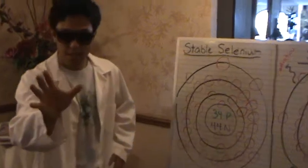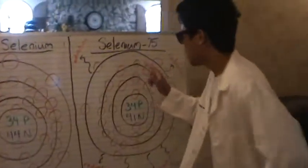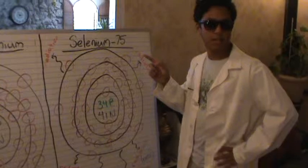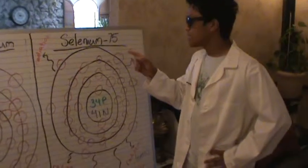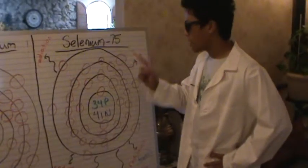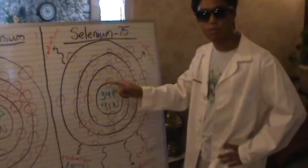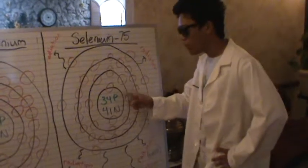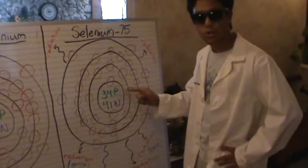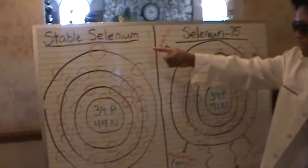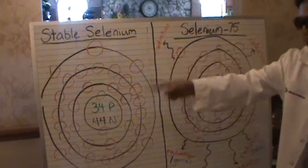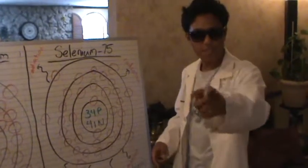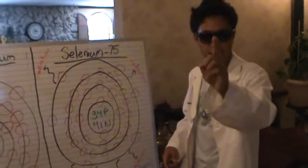Now this is selenium 75. Its atomic number is 34, which means that it has 34 protons, 34 electrons, but only 41 neutrons. But stable selenium has 44 neutrons — this is madness! No. This is an isotope.